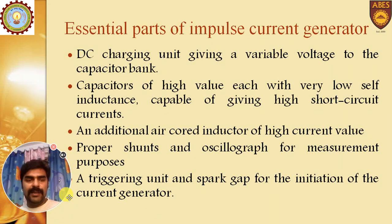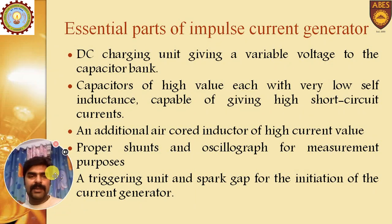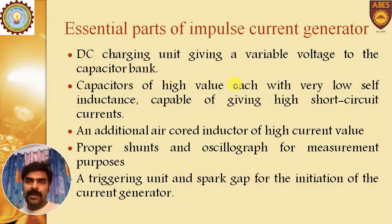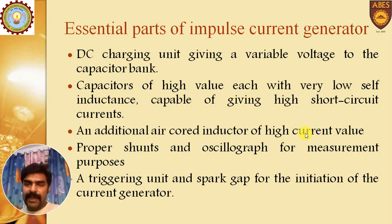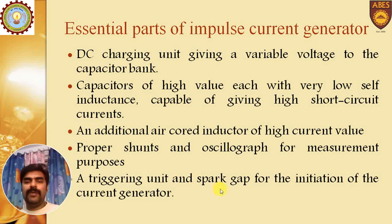The next question covers the essential parts of an impulse current generator. The main components are: a DC charging unit that provides variable voltage to the capacitor, a high-value capacitor, a low-inductance air-core inductor of high current value, a proper shunt and oscillograph for measurement, and a triggering unit with spark gap for initiation of the current generator.